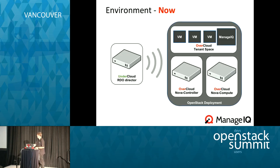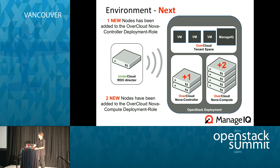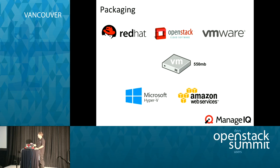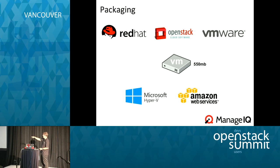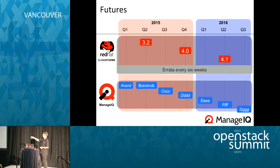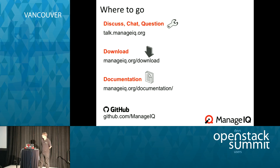So that was the scale-out — going from a number of controller and compute nodes using RDO Director integration as the under-cloud provider, then adding more compute and more controllers. As for packaging: ManageIQ is delivered as a Red Hat Virtualization image, an OpenStack image, and you can run it in Amazon as a native appliance. Hyper-V is coming on board. The release cadence: we have an obsession with chess and name releases after grand chess masters — we're now on Botvinnik, currently at RC3.